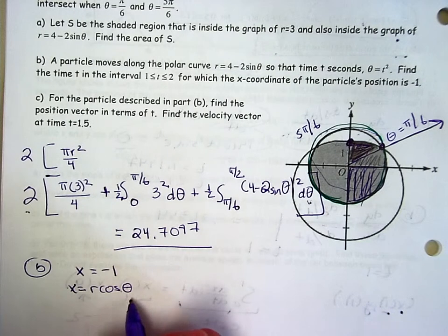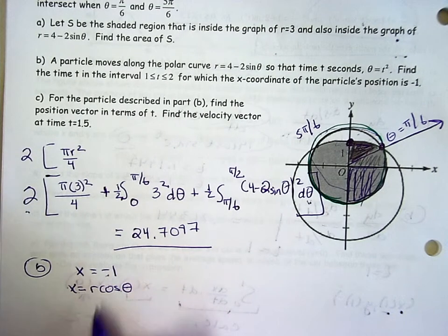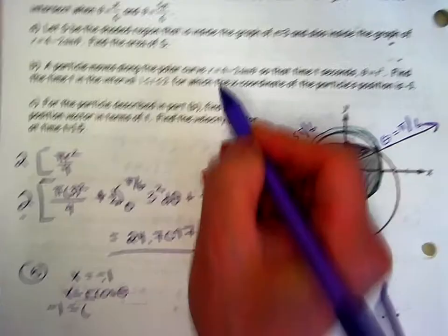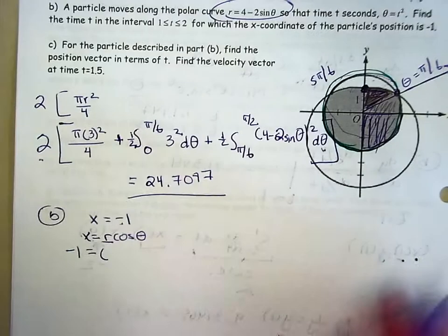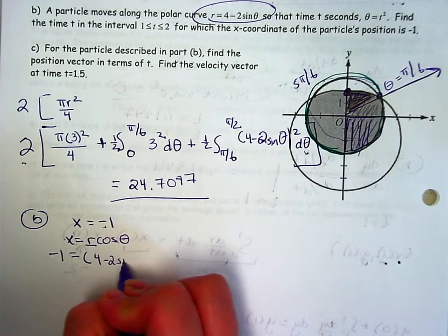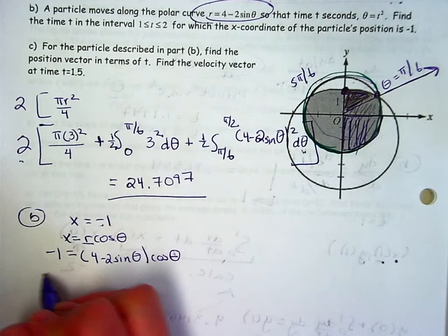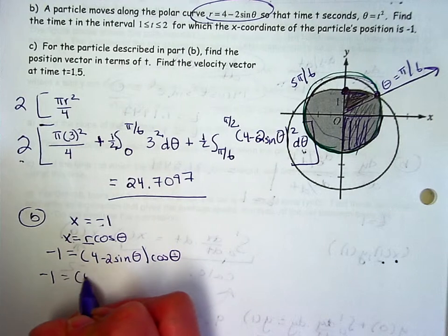Well, they tell you θ is t², so I'm going to do all my substitution. x is -1. r is, they tell you they're talking about the limacon, so 4 - 2sinθ, times cosine θ. But if I solve this, I'll get θ. I'm going to go ahead and replace θ with t².